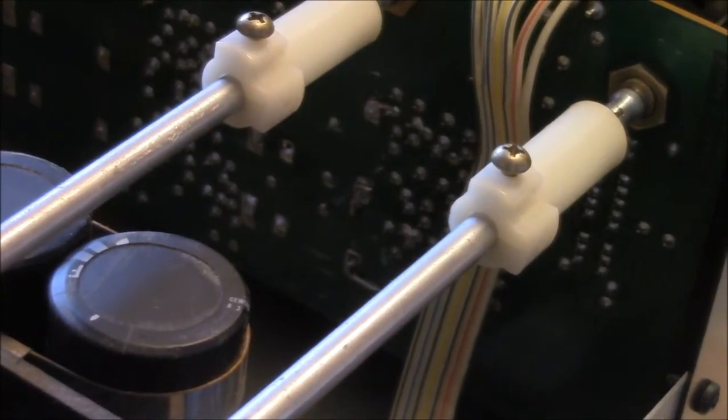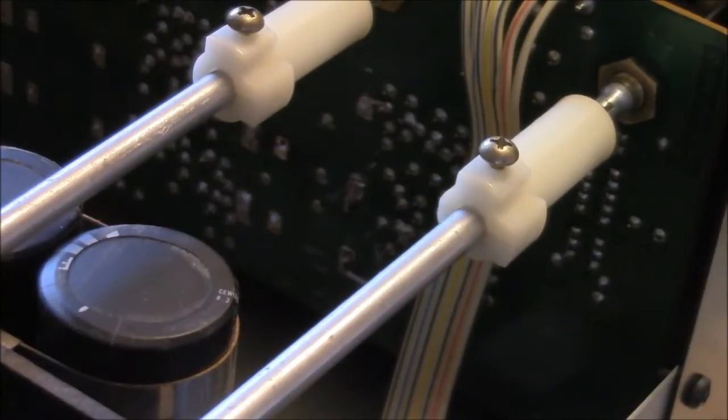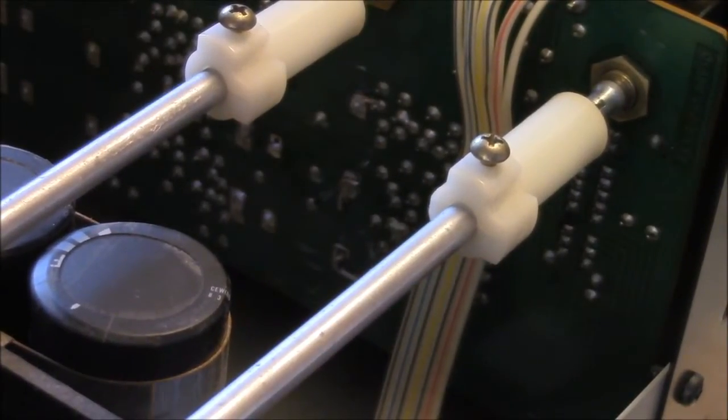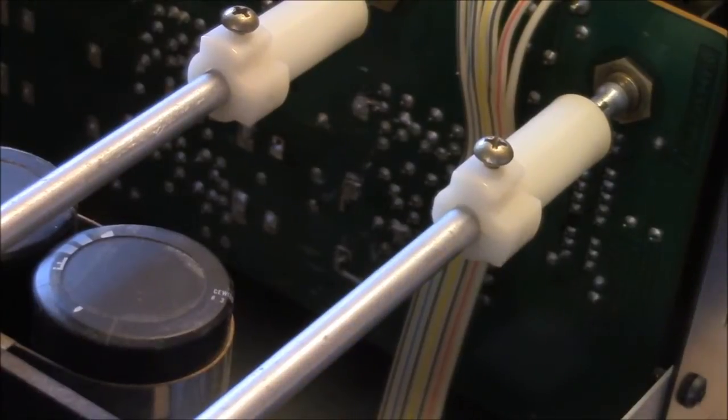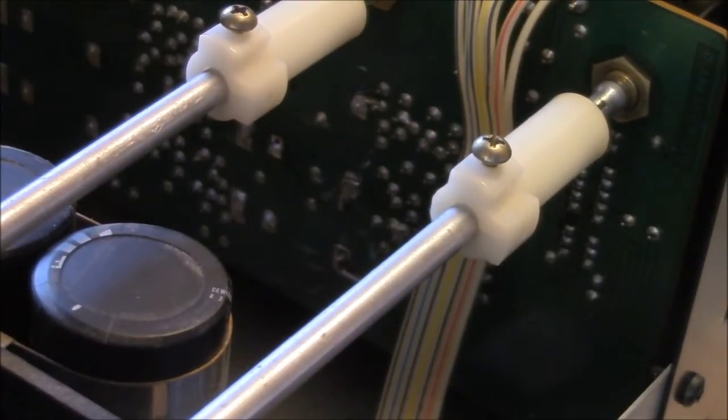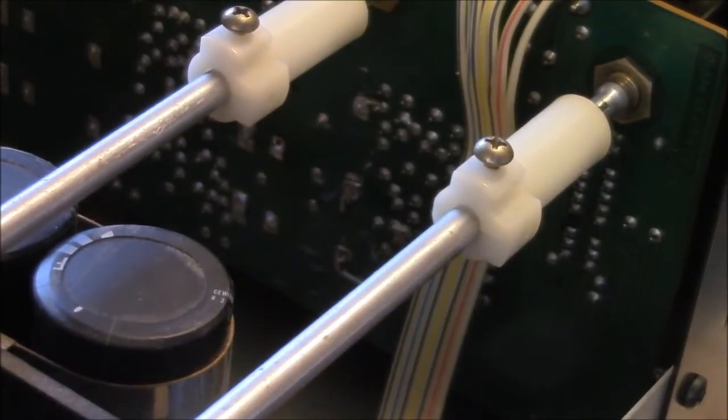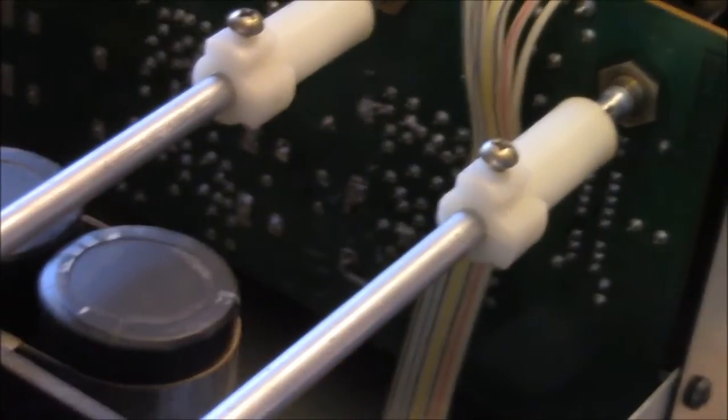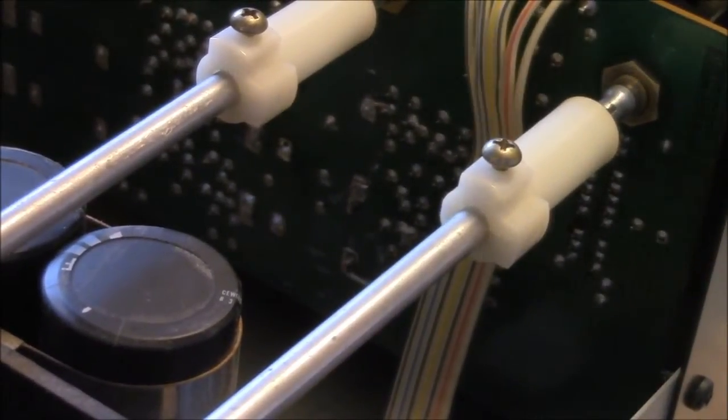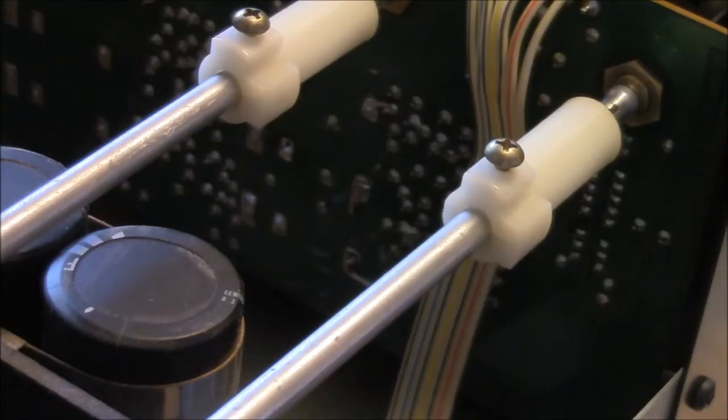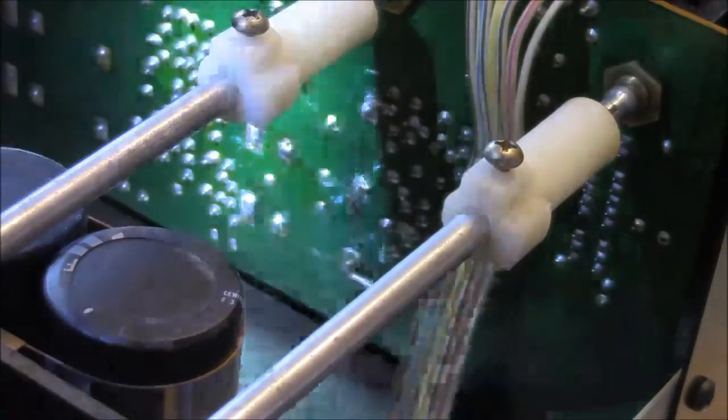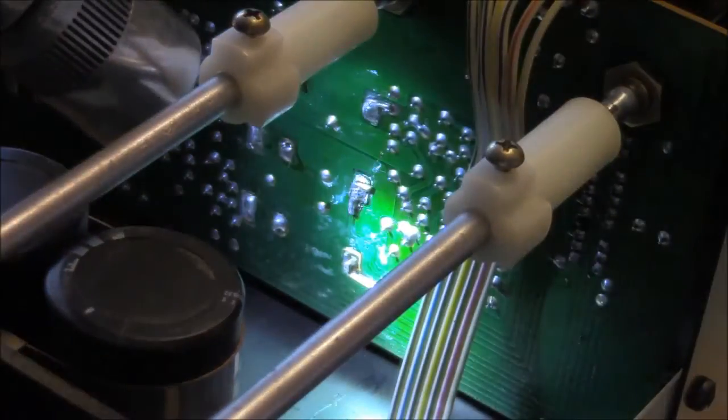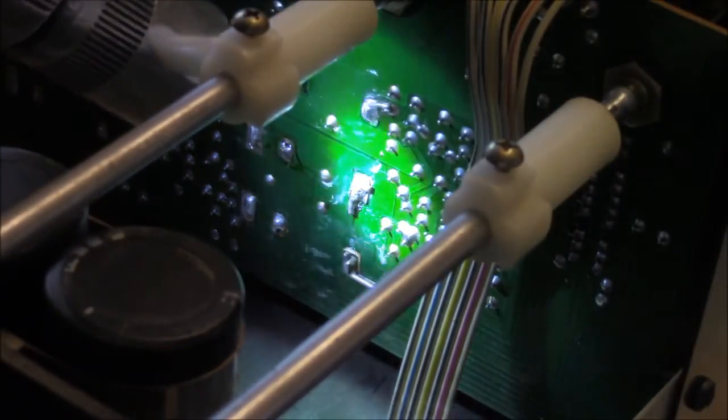So what I did was I carefully took a modeler's knife, or one of those X-Acto blades. Actually, it's a surgeon's scalpel, and used the number 11 blade and kind of carefully scratched a little place away to clean that green kind of covering off and then tin that and then laid that little piece of wire in there.